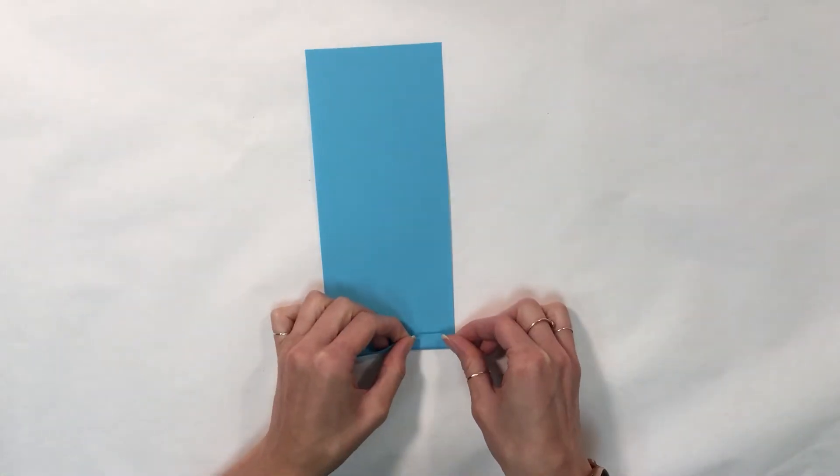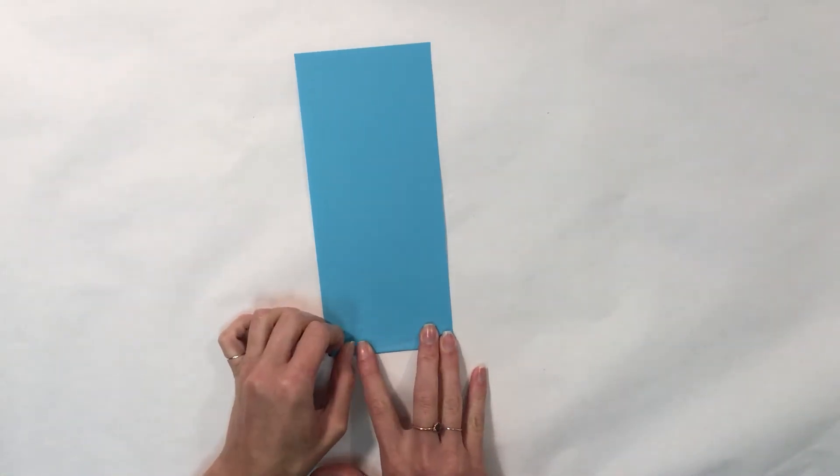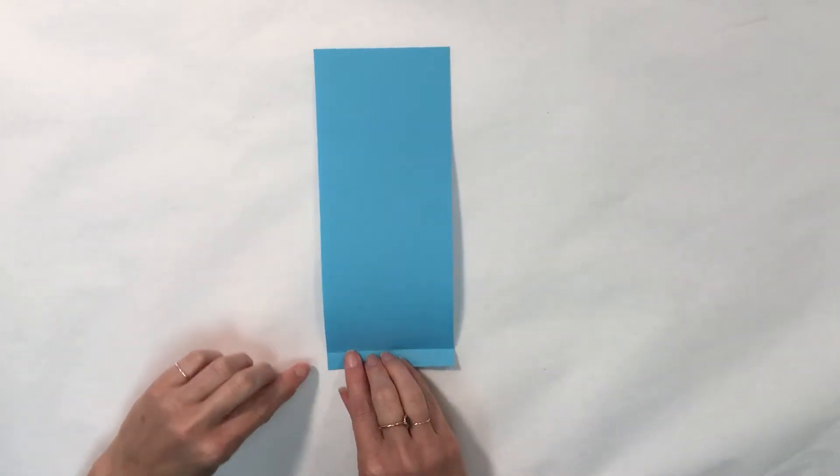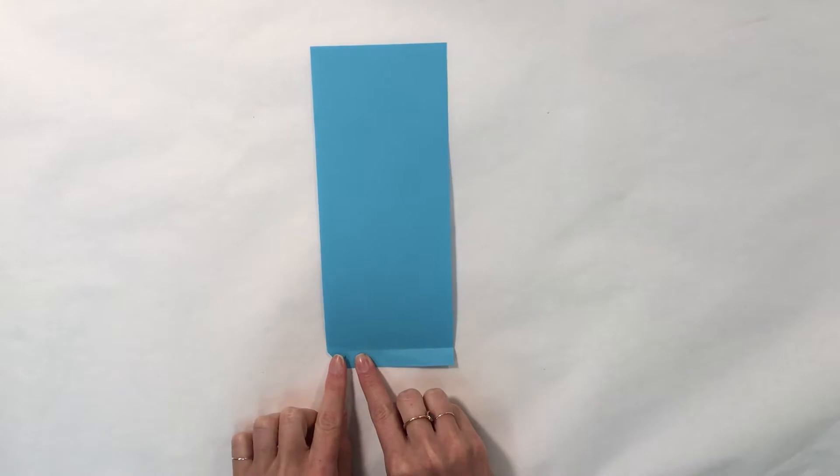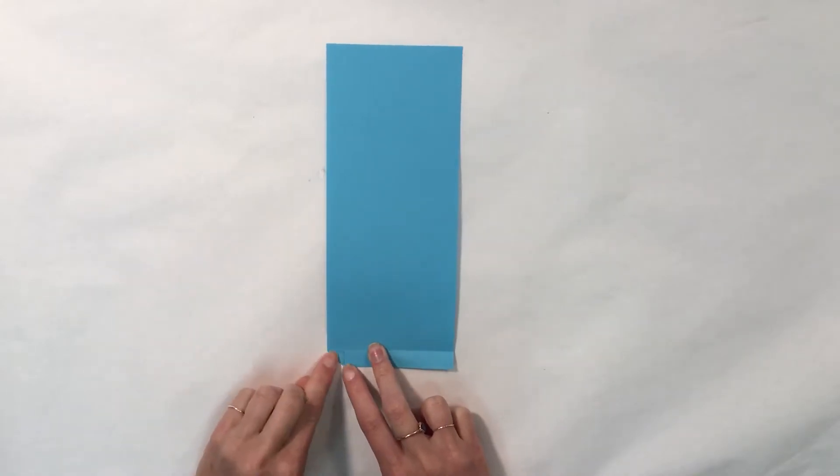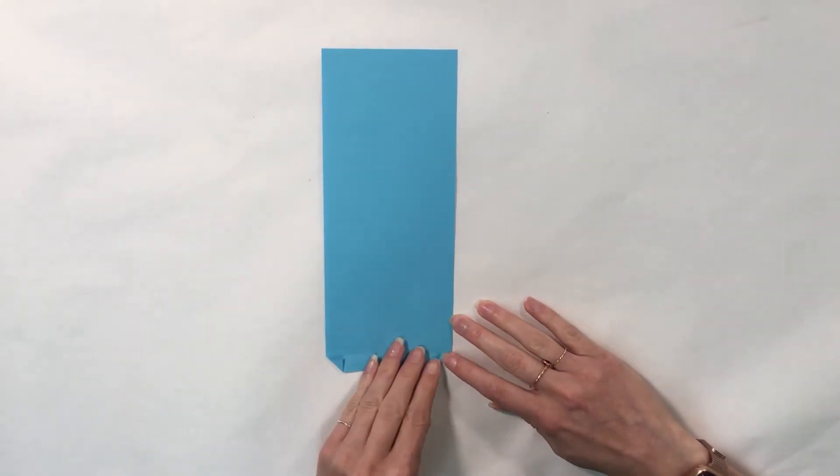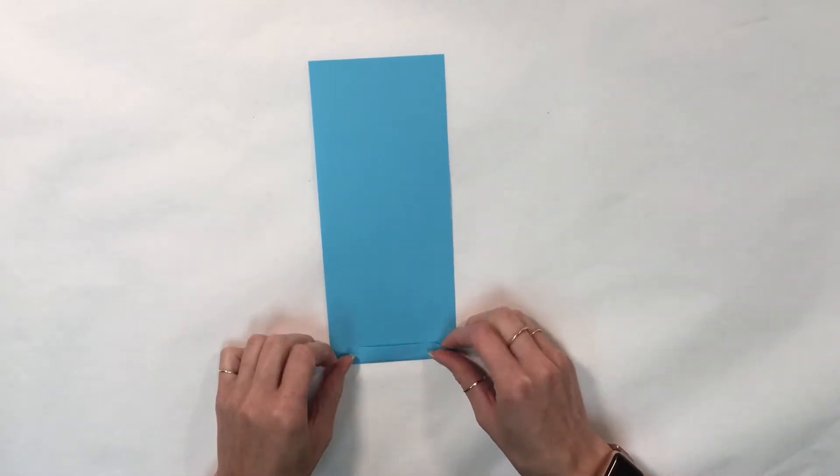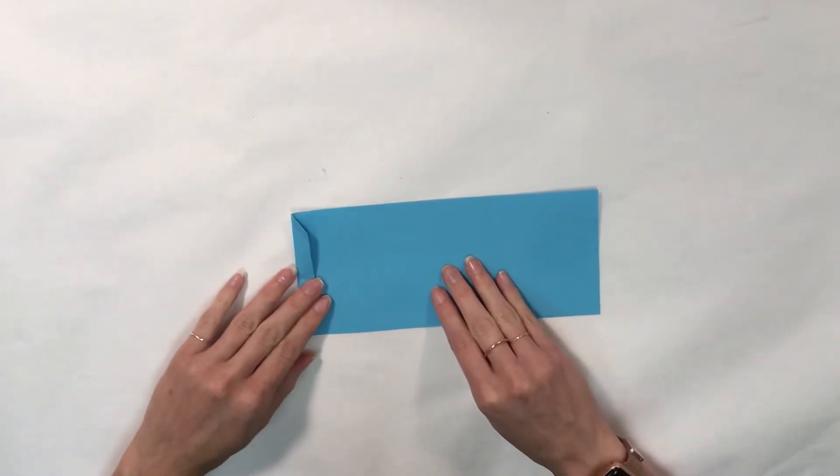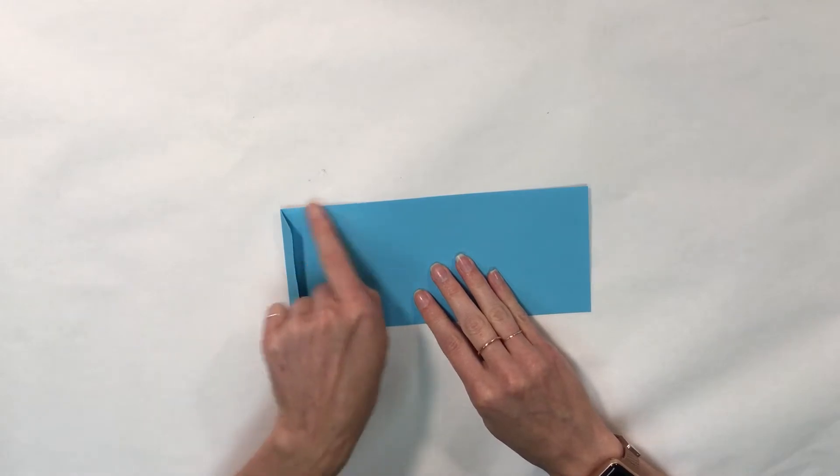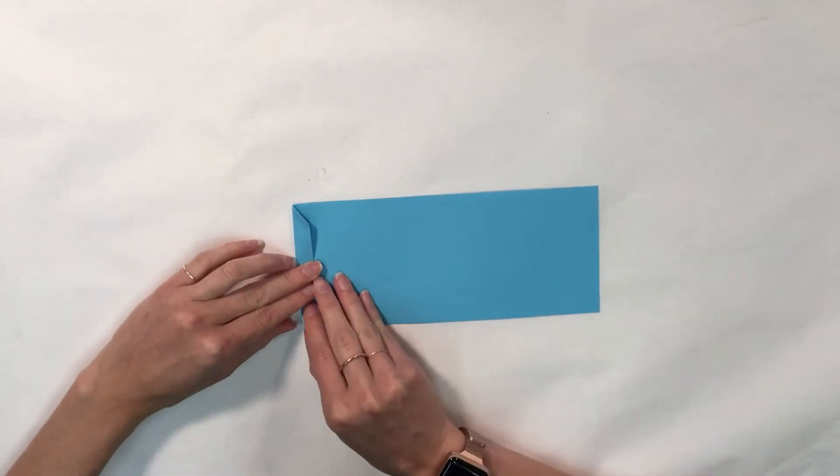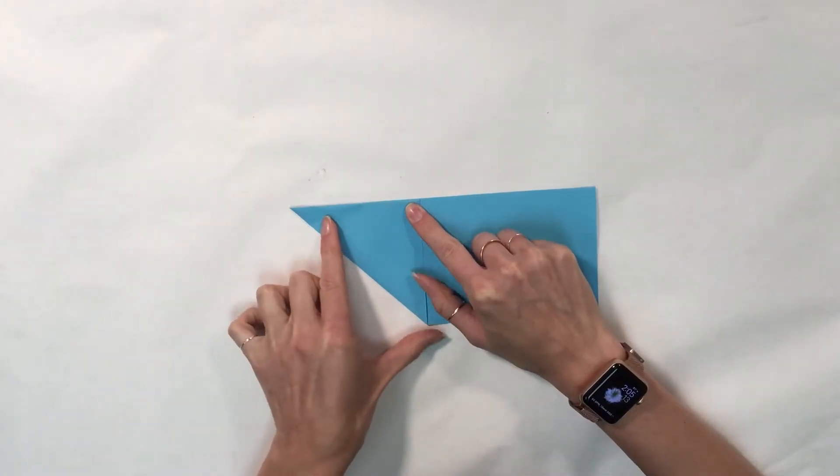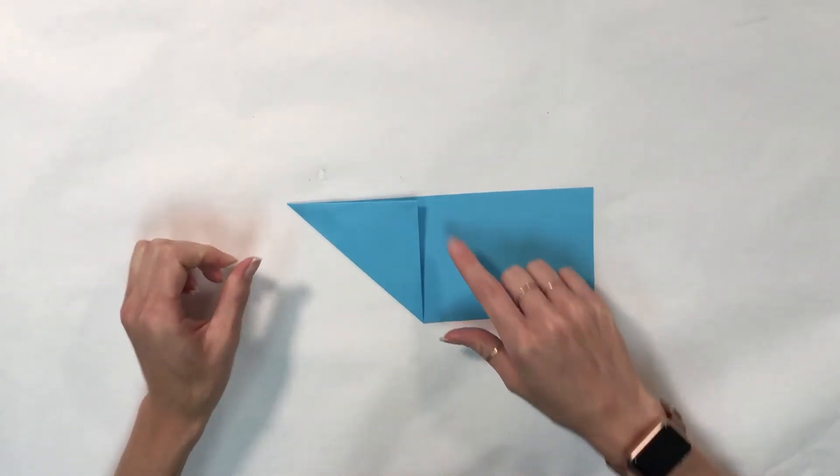To begin I'm going to fold the edge of my paper about 1 centimeter up. Then I'm going to fold the corners in. I'm going to fold the edge up, turn my paper, and fold the corner to this edge. And repeat for the other side.